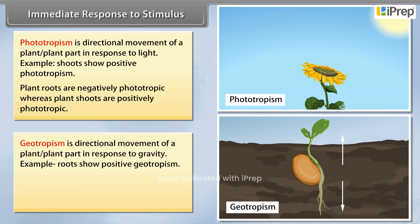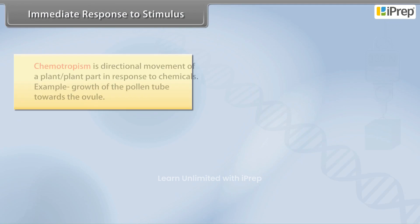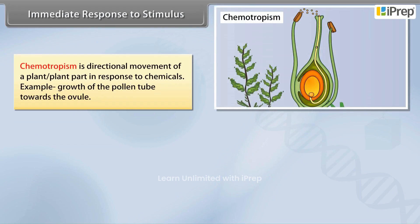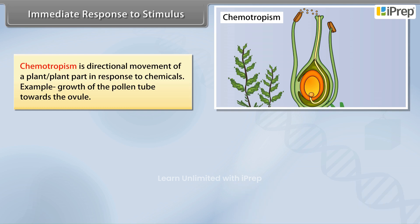Geotropism is the directional movement of a plant part in response to gravity. For example, roots show positive geotropism. Plant roots are positively geotropic, whereas plant shoots are usually negatively geotropic. Chemotropism is the directional movement of a plant or plant part in response to chemicals.